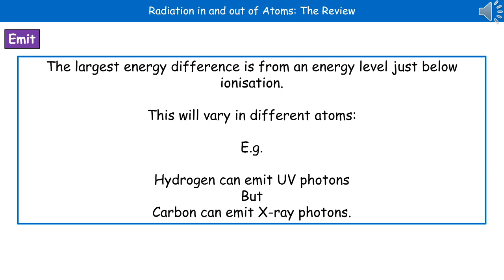The largest energy difference is from an energy level just below ionization, which hopefully is quite logical. If we've given it enough energy to completely leave, then just below that level is going to give us the largest energy difference. This will vary in different atoms, because there are going to be different levels that those electrons can get to before being completely emitted.